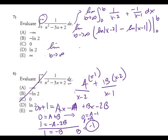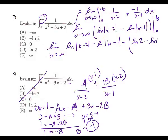Substituting: natural log |B minus 2| minus natural log |B minus 1|, minus the quantity natural log |0 minus 2| minus natural log |0 minus 1|. When I plug in infinity, both log terms go to infinity — infinity minus natural log of 2 — but since we have infinity, it's still infinity. The answer is E — it diverges.